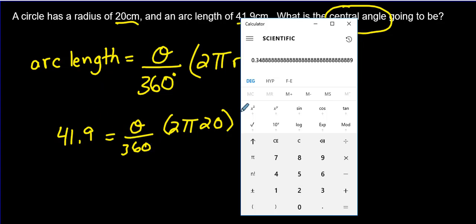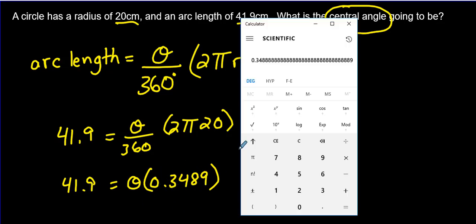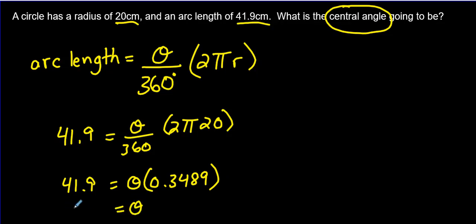Now all we have to do is we have this next to theta, and just like the last question, we want to get rid of theta and this decimal here. So we divide both sides by this decimal. So it's 41.9 divided by this decimal here, 0.3489. Theta times 0.3489. To get rid of this, divide both sides by this. So 41.9 divided by 0.3489, and we get 120. So theta would be about 120 degrees.